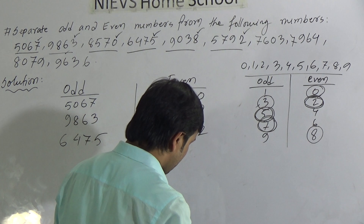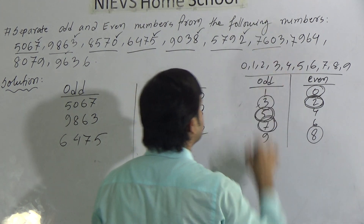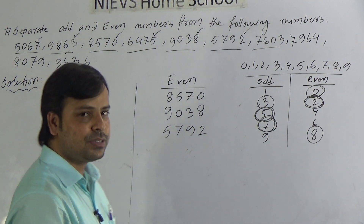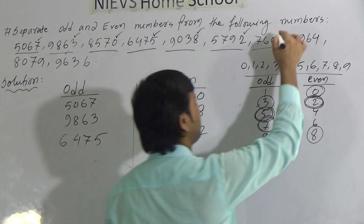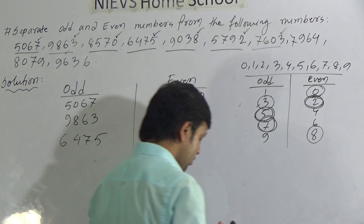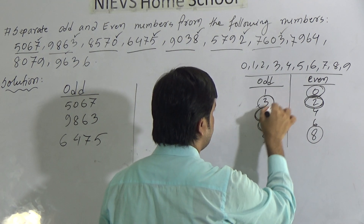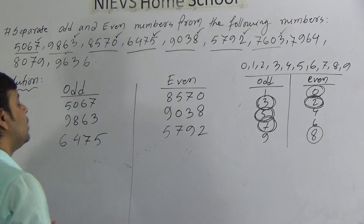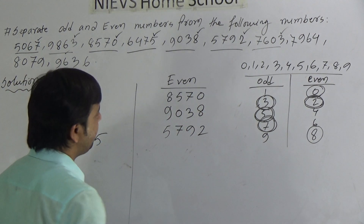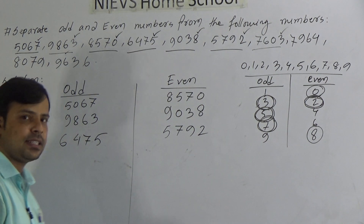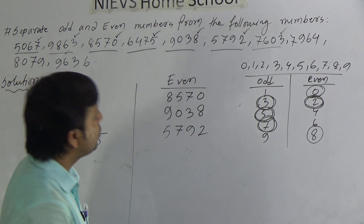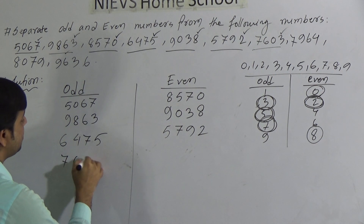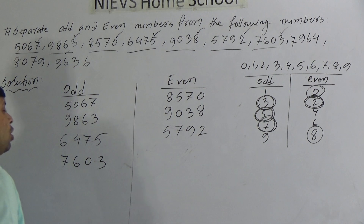Dear students, now go to the next number: 7603. Here the unit place of the number is 3. We can say 3 is odd. So as 3 is odd, the unit place of the number 7603 is odd, meaning the number is odd. We write 7603 under odd.